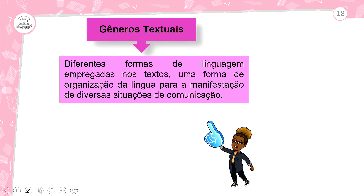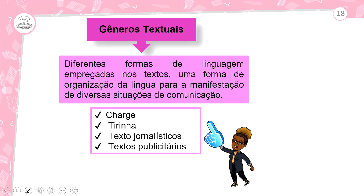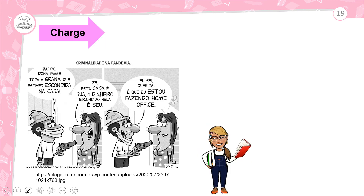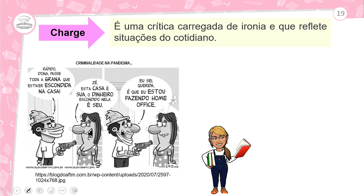Os gêneros textuais são diferentes formas de linguagem empregadas no texto — uma forma de organização da língua para a manifestação de diversas situações de comunicação. Temos: charge, tirinha, texto jornalístico, textos publicitários. Para interpretar a charge: ela sempre vai fazer uma crítica carregada de ironia que reflete situações do cotidiano.